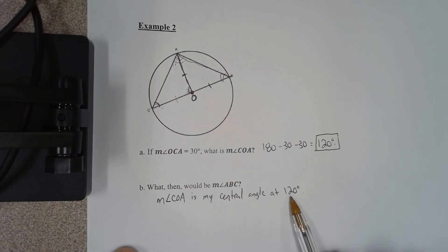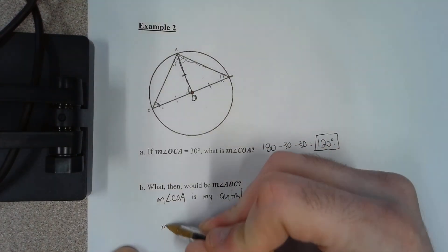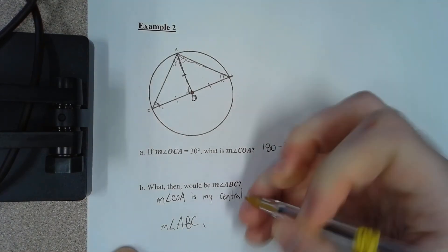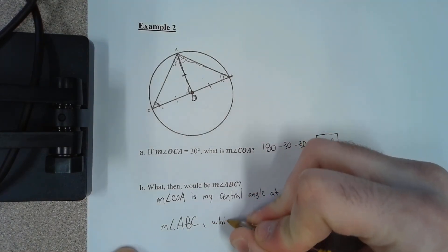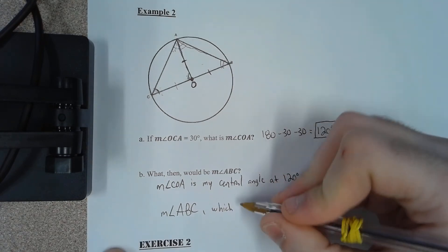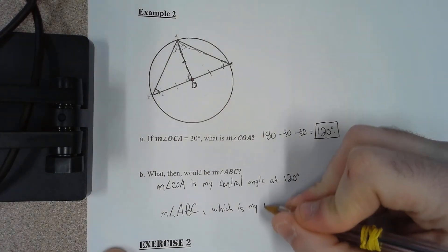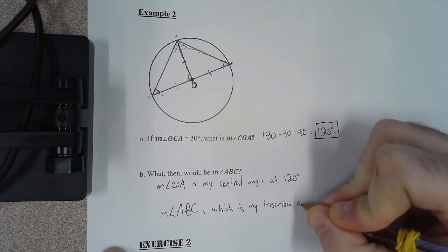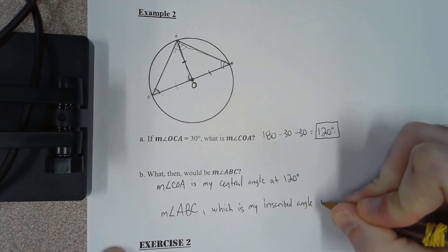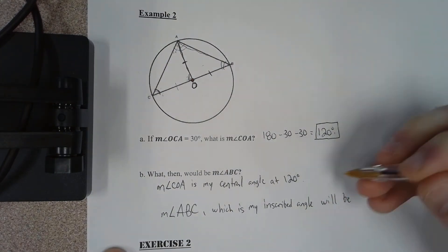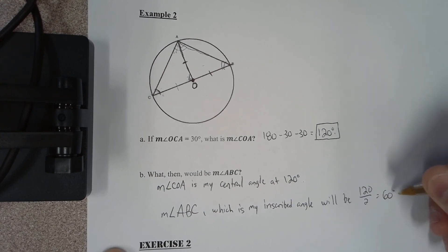So if COA is 120, that means the measure of angle ABC, which is my inscribed angle, will be half of my central. So 120 divided by 2 is equal to 60 degrees.